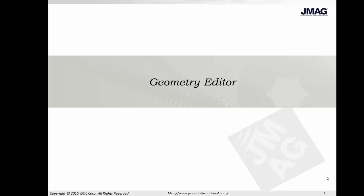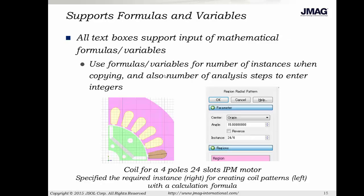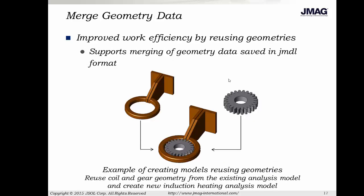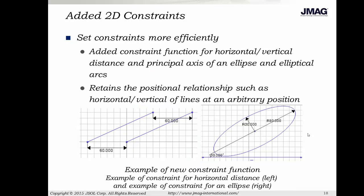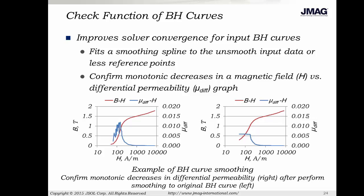Jumping back into the presentation, the demonstration covered the region Boolean and pattern features, as well as the ability to input formulas in our dialog boxes in the geometry editor. I didn't demonstrate the merged geometry data, but effectively it allows us to save a model in the JMDL format and then merge it with another model saved in that same format, combining different geometries into a single geometry model. There are also many new 2D constraints — there are just too many to go through individually. We've also demonstrated the ability to do magnetic field analyses with hysteresis, and we talked about how those hysteresis curves would work in 2D transient response analyses. We've also looked at the check function for BH curves, including the ability to smooth rough data to improve results and eliminate warnings about non-monotonically decreasing gradients.